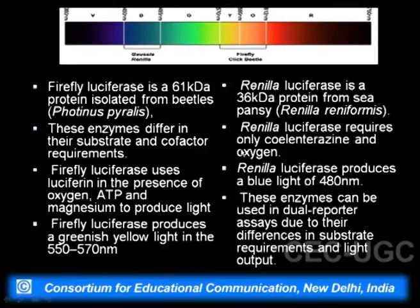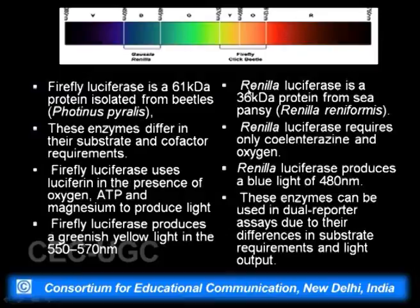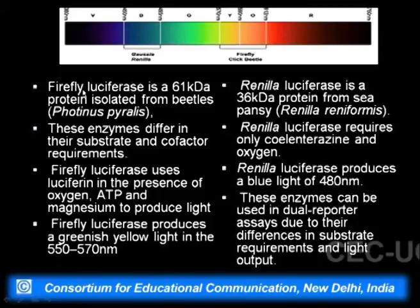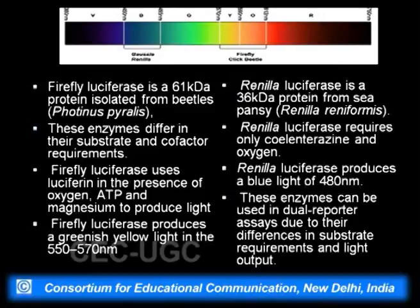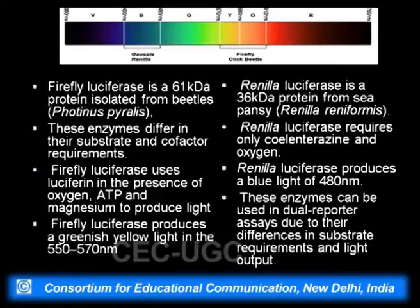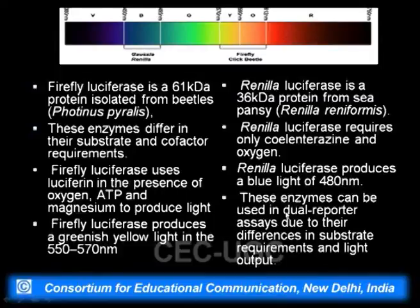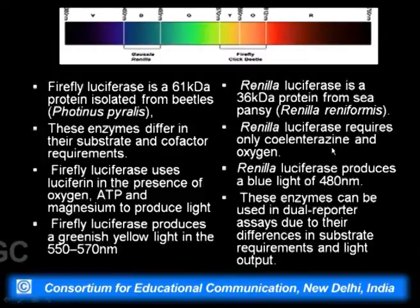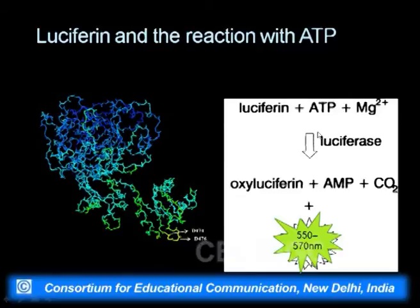Comparing marine and terrestrial luciferases: in the sea we have Renilla luciferase and on land firefly luciferase. Firefly luciferase is a 61 kDa protein using ATP as a cofactor and produces a greenish-yellow glow. Renilla luciferase does not use ATP and produces blue light. These two can be used together for dual reporter assays as reporter proteins. Whenever ATP is present it can be quantified by the amount of light produced by the firefly luciferase reaction.